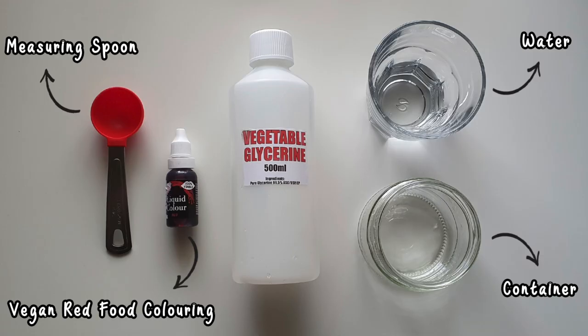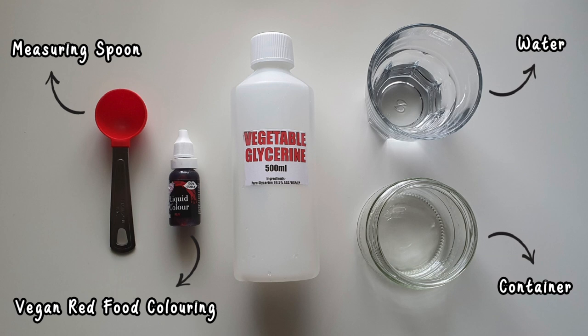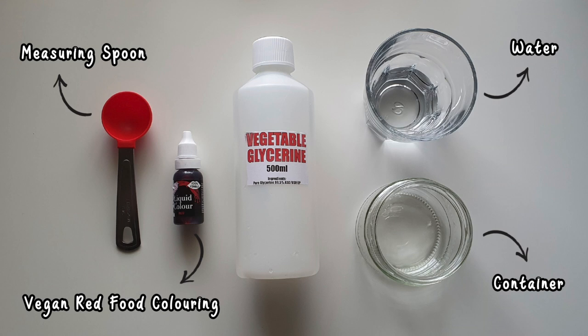To make fake blood you will need a tablespoon for measuring, vegan red food coloring. This is a cruelty-free model and the dye does not contain carmine or crushed red insects. Vegetable glycerin, which is derived from plant-based sources and does not contain animal ingredients, water for thinning the glycerin, and a container to mix and store the fake blood.